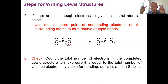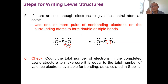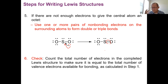Step five: borrow non-bonding electrons from a neighboring oxygen — make them bonding instead. Change the single bond to a double bond. Those two electrons still belong to oxygen; you're just making them shared instead of lone pair. Now sulfur has six bonding electrons and two non-bonding — sulfur is satisfied. Oxygen still has two non-bonding pairs and two bonding pairs, still eight valence electrons. The total is still 18. Lewis structure is complete.